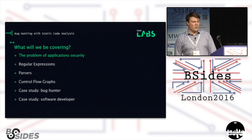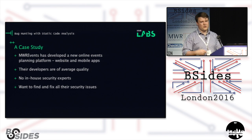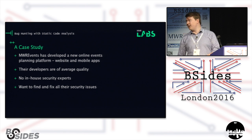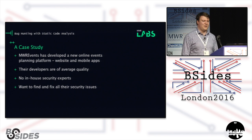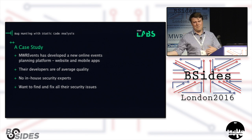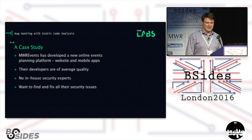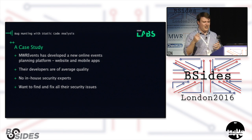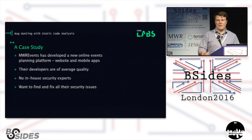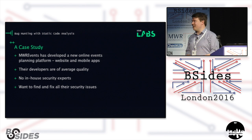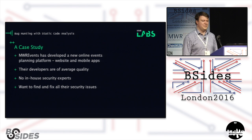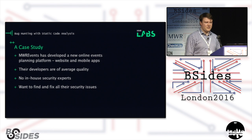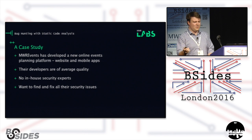Throughout the talk I'm going to refer to a company as a case study — MWR Events — who've been developing a new online events management platform. They've got a website, mobile apps, and a backend built on some horrible embedded platform. The developers are average quality, not completely terrible but not particularly hot either. They've got no in-house security expertise, so they're contracting out to find people to help them. So if they want to find and fix all their bugs, where do we start?